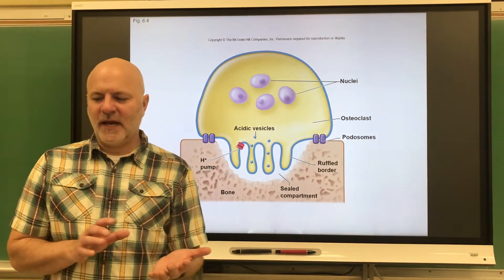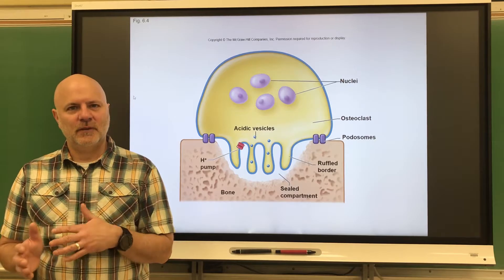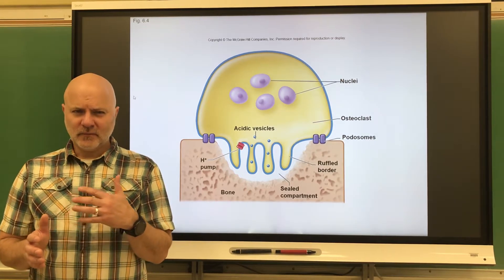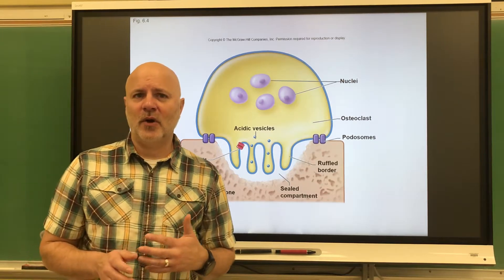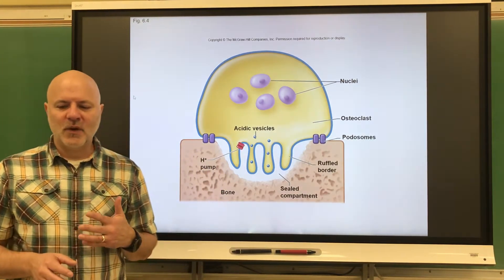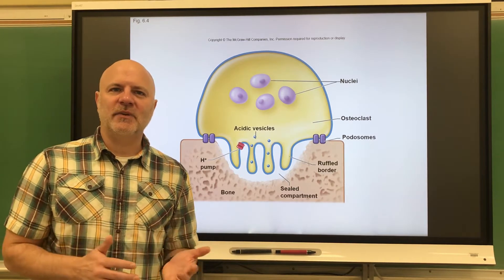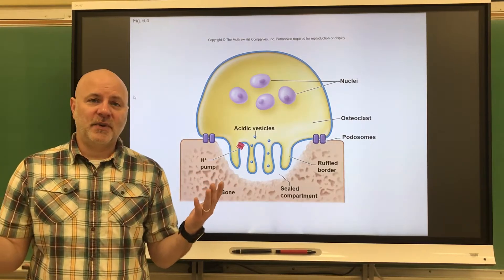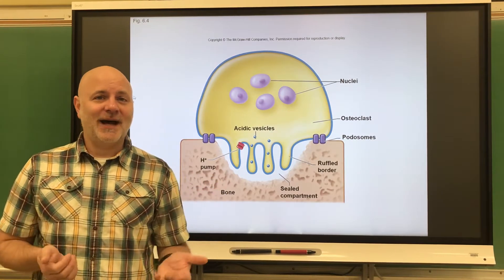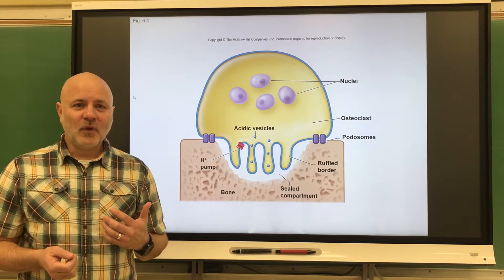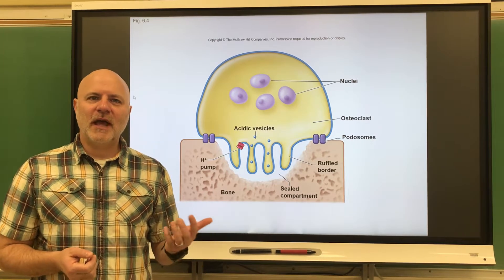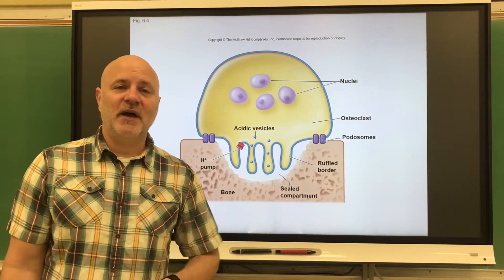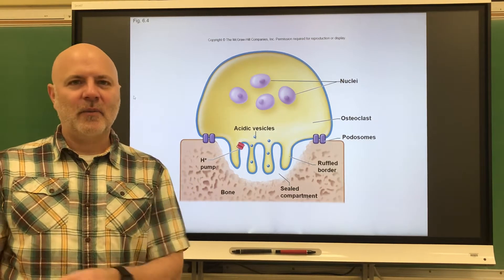Osteoblasts and osteoclasts work continually — we are constantly remaking our bone. We recycle five to seven percent of our bone per year, which means we replace our spongy bone every three to four years. We replace our compact bone every ten years, so a complete replacement of compact bone occurs on a ten-year cycle.